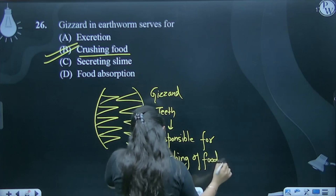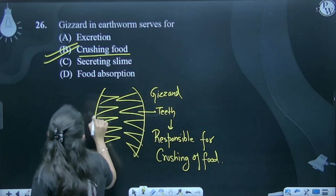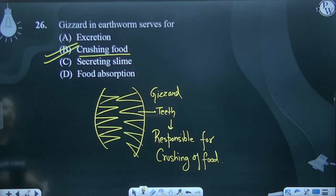This is not excretion — that is not the function of the gizzard. So the answer to this question is crushing of food. For question number 20, six, the answer is crushing of food.